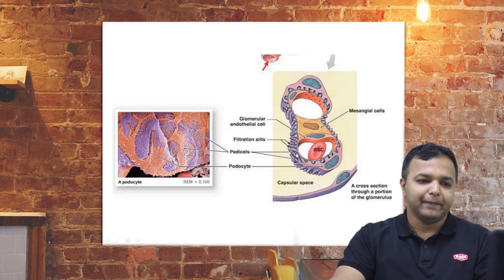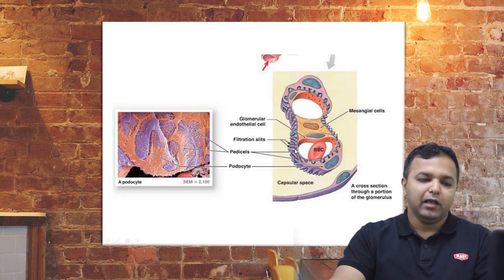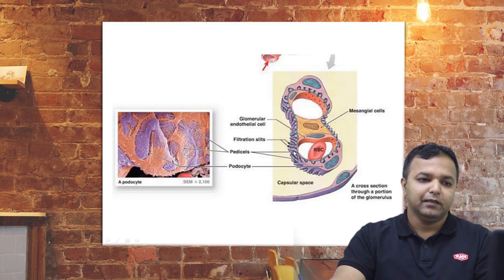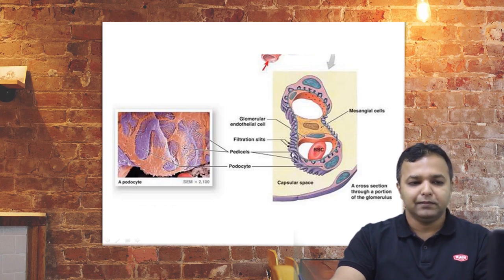In nephrotic syndrome, the problem is at the podocyte level. Either it is because of a mutation in the gene which produces podocytes or pedicles, or because of circulating immune factors which damage these pedicles. There is loss of these pedicles, and as a result, albumin leaks — that is the basic pathological mechanism.